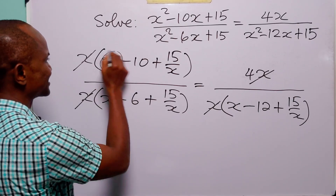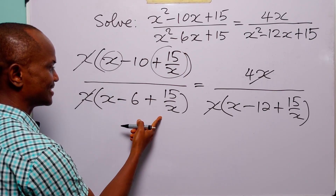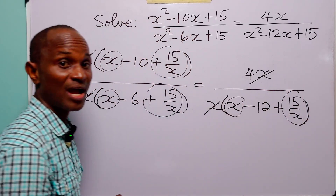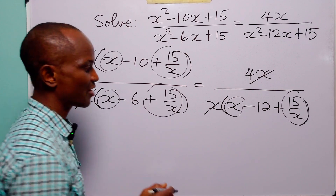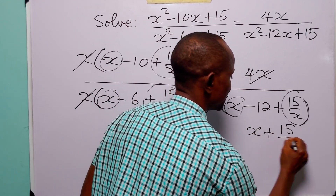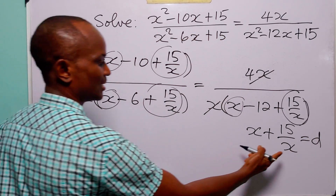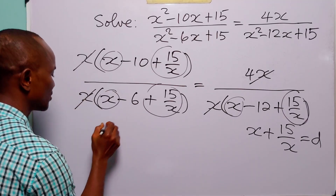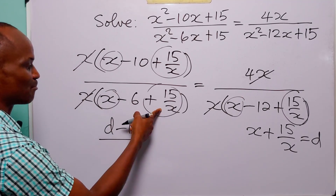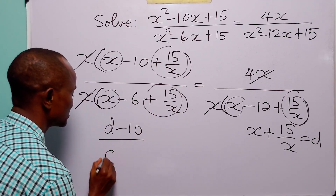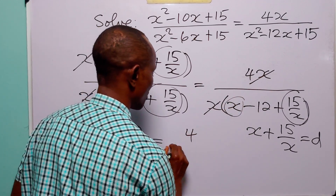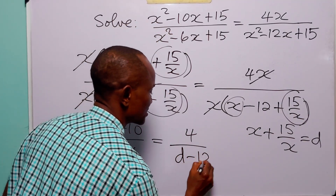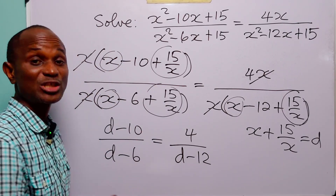Now look at this first equation. We have x plus 15 over x in the first denominator, x plus 15 over x in the second denominator, and x plus 15 over x in the third denominator. So we need to do a substitution. Let x plus 15 over x be equal to d. With this substitution, x plus 15 over x becomes d minus 10, the next denominator becomes d minus 6, and on the right hand side we have 4 over d minus 12.